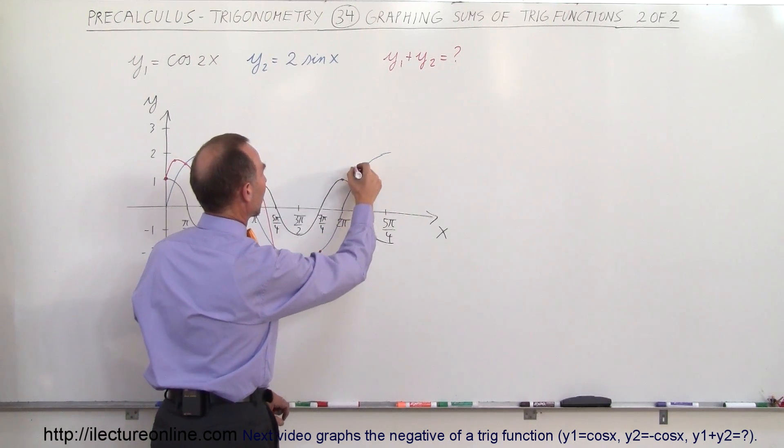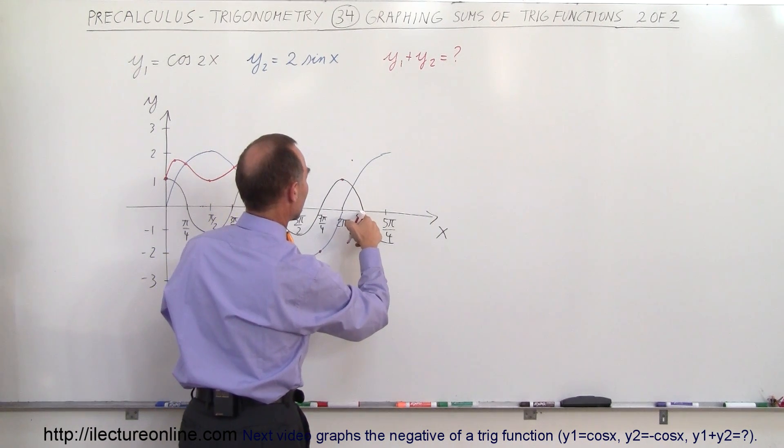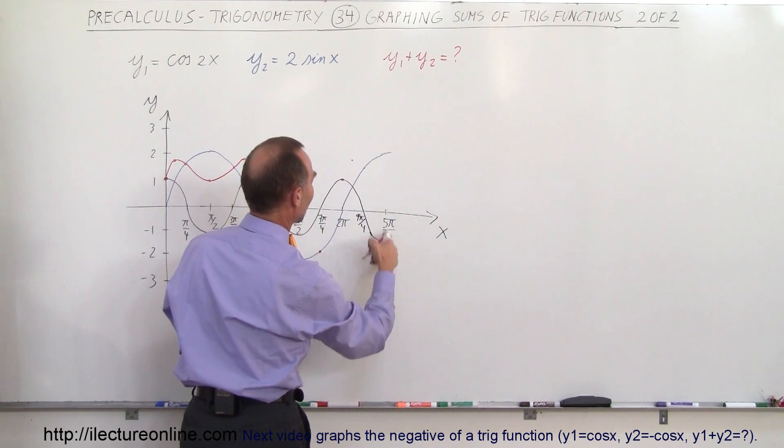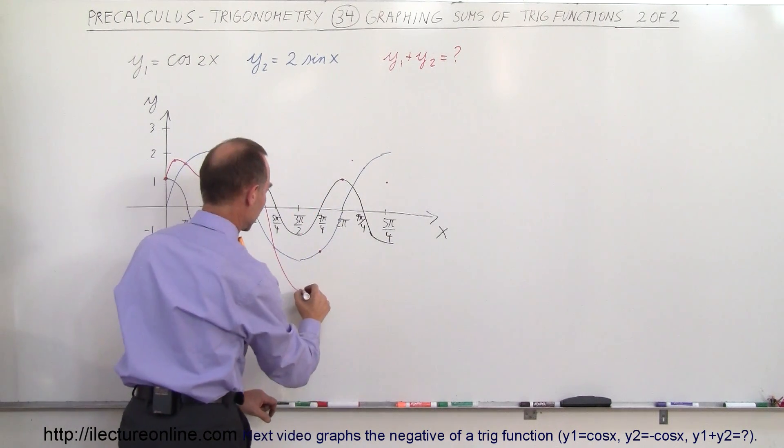Over here, you add these two together, you get about this value right there. Over here, this is 0, and this is that value right there. And over here, this is minus 1, this is plus 2, so you're back to a value of 1. So if you continue connecting these dots, you get something that looks like this.